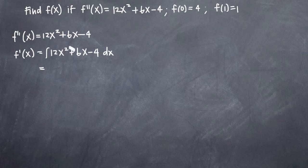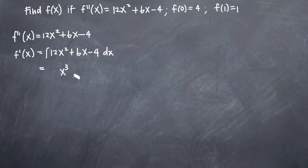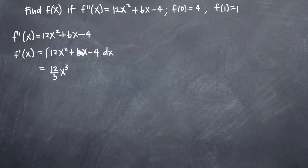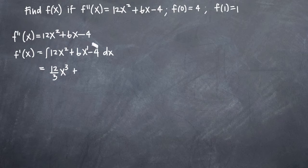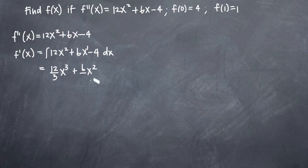To take the integral, we have x squared here — we're going to be adding 1 to the exponent, so 2 plus 1 gives us 3 in the exponent. Then we divide the coefficient, 12, by the new exponent, 3. Same thing here with the 6x — we have x to the first power, so we'll add 1 to the exponent: 1 plus 1 gives us 2, so we'll get x squared. Then we'll divide the coefficient, 6, by the new exponent, which is 2.